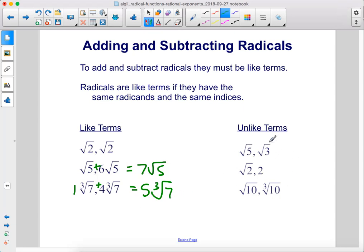These are unlike terms. The square root of 5 and the square root of 3 cannot be added, square root of 2 and 2, or the square root of 10 and the cube root of 10.